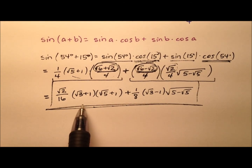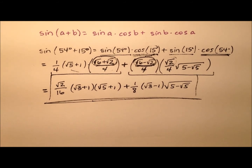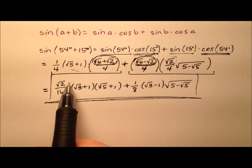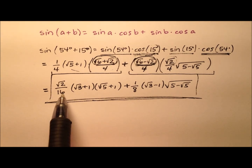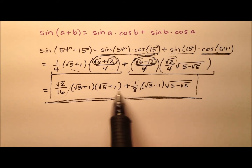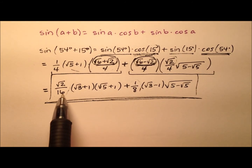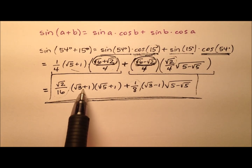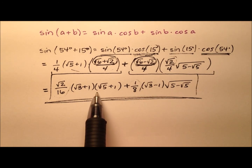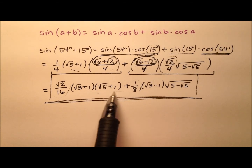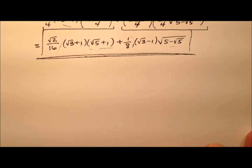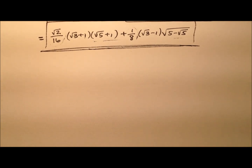You'll see a lot of patterns here. As you work through these exact values for sine in this series, we've seen a lot of patterns in these values. I've pulled out the square root of 2 over 16 and the 1 eighth as fractional coefficients out front. Then we have the square root of 3 plus 1, the square root of 3 minus 1, the square root of 5 plus 1, and a square root expression containing 5's. Let's move this up a little and grab a calculator to verify we have the exact value for the sine of 69 degrees.